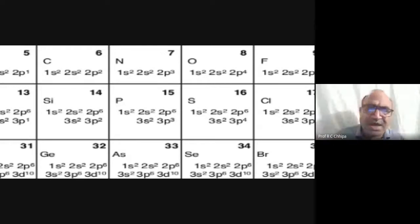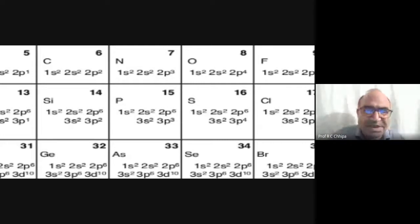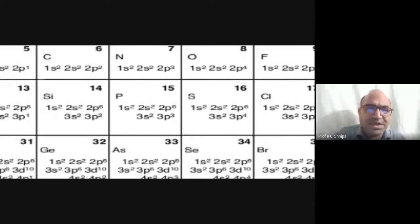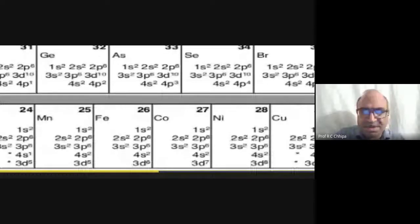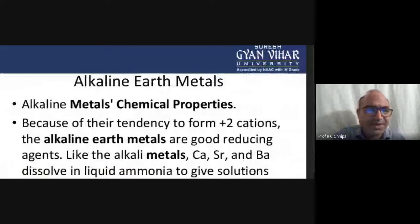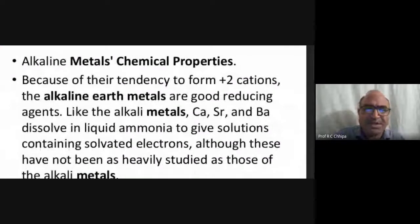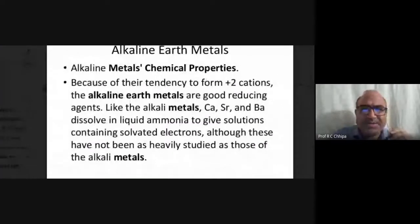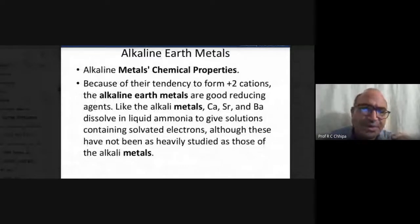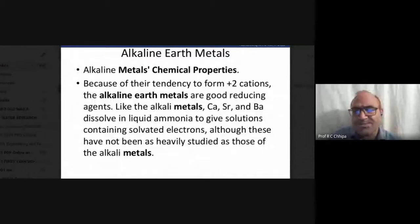That is why alkaline earth metals are so called. Regarding their chemical properties: because of their tendency to form plus two cations, alkaline earth metals are reducing agents. Reducing agents can easily reduce other agents.